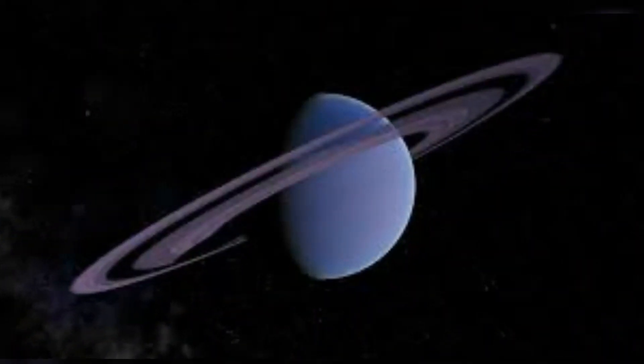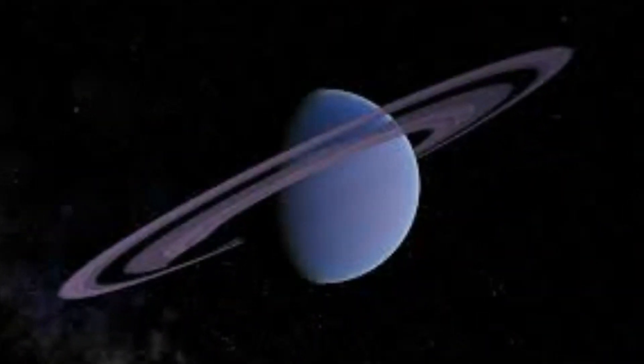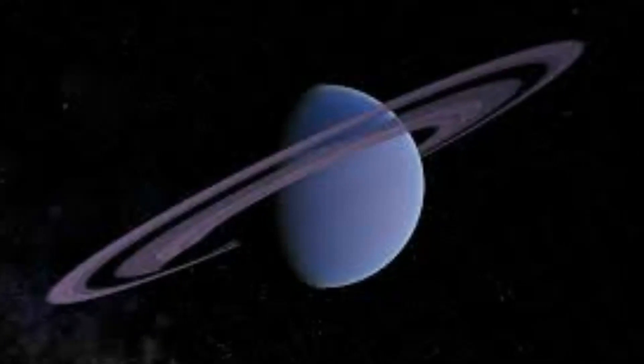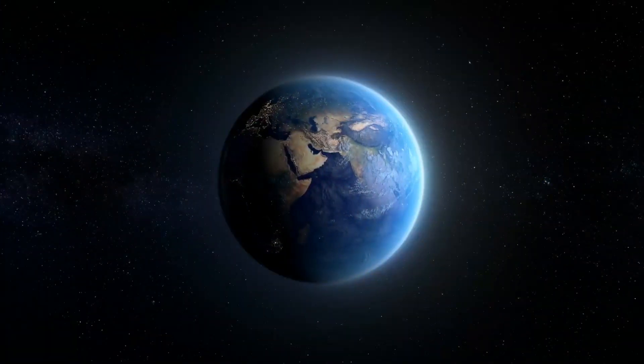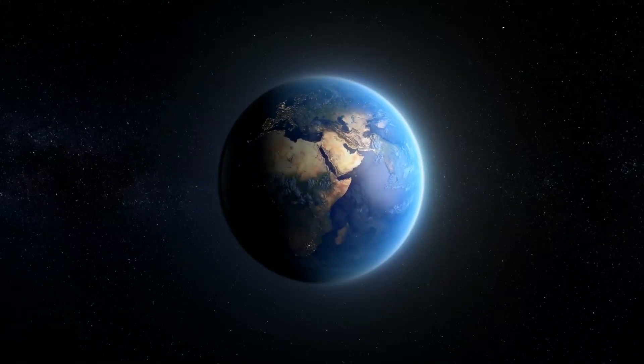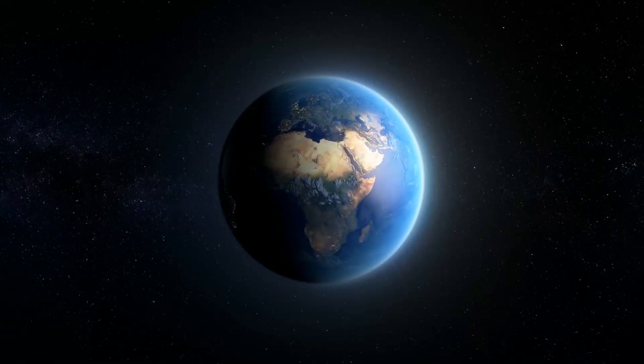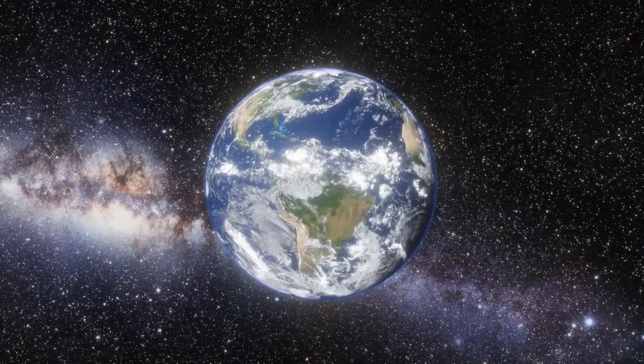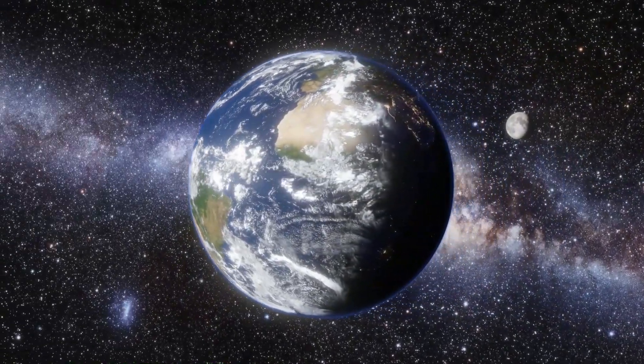This one is also just still a candidate at this point, but if real, it is about six times as massive as Earth. This would make it a super-Earth. These are planets that are significantly larger and more massive than Earth, but smaller and less massive than Neptune. It is estimated to orbit the star every 5.2 years.